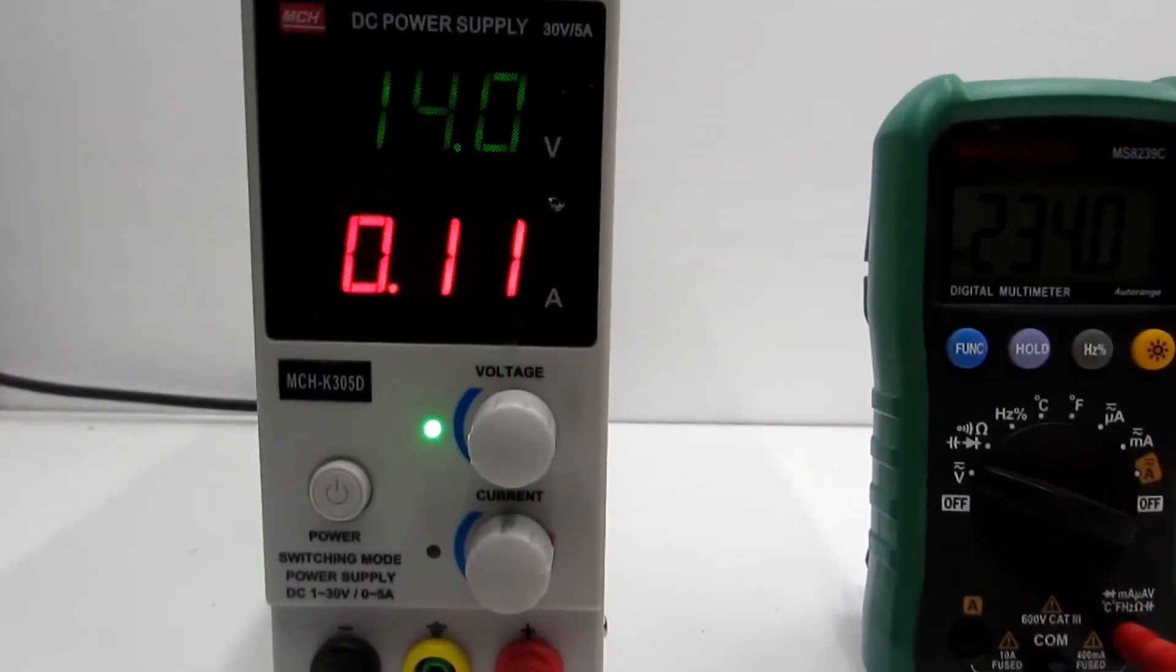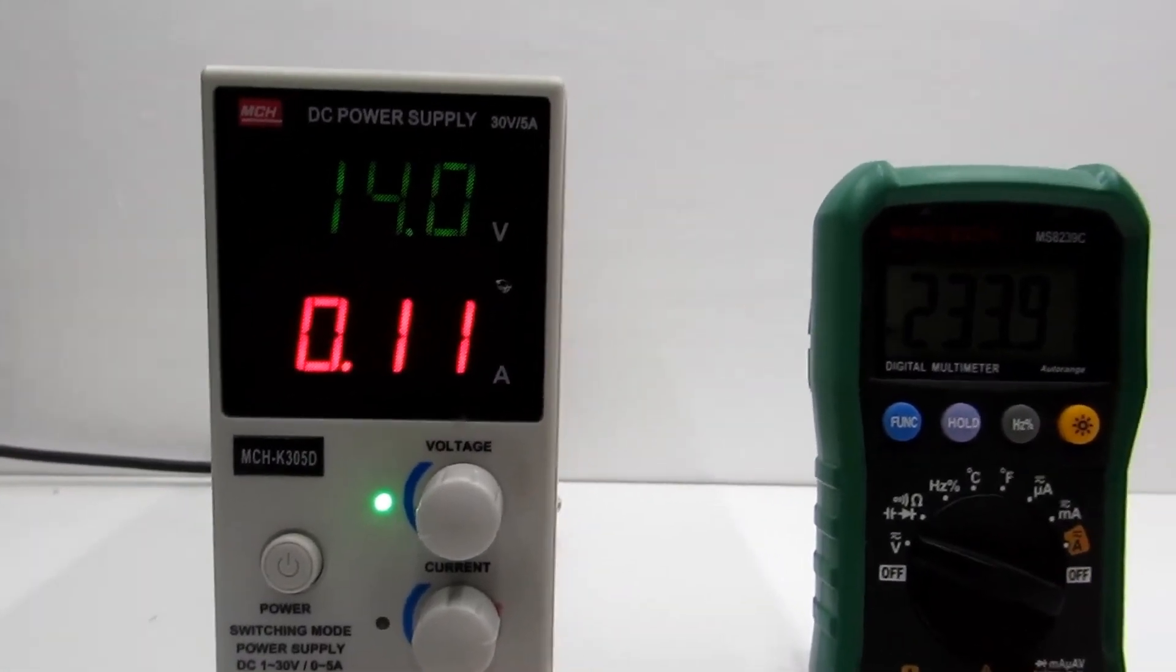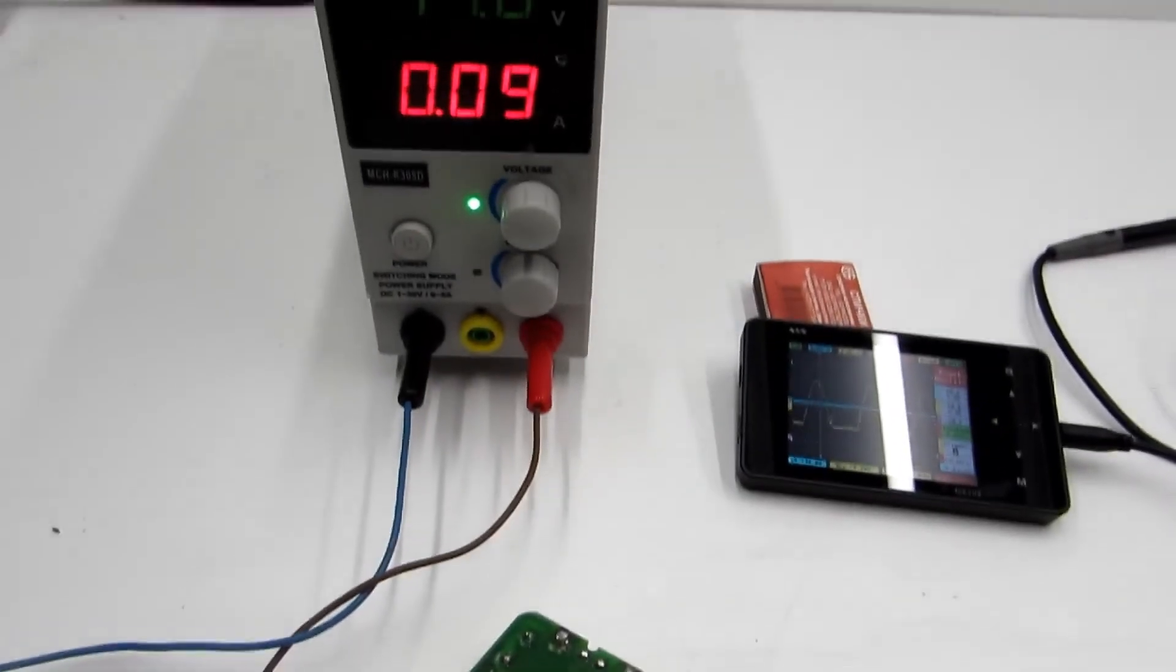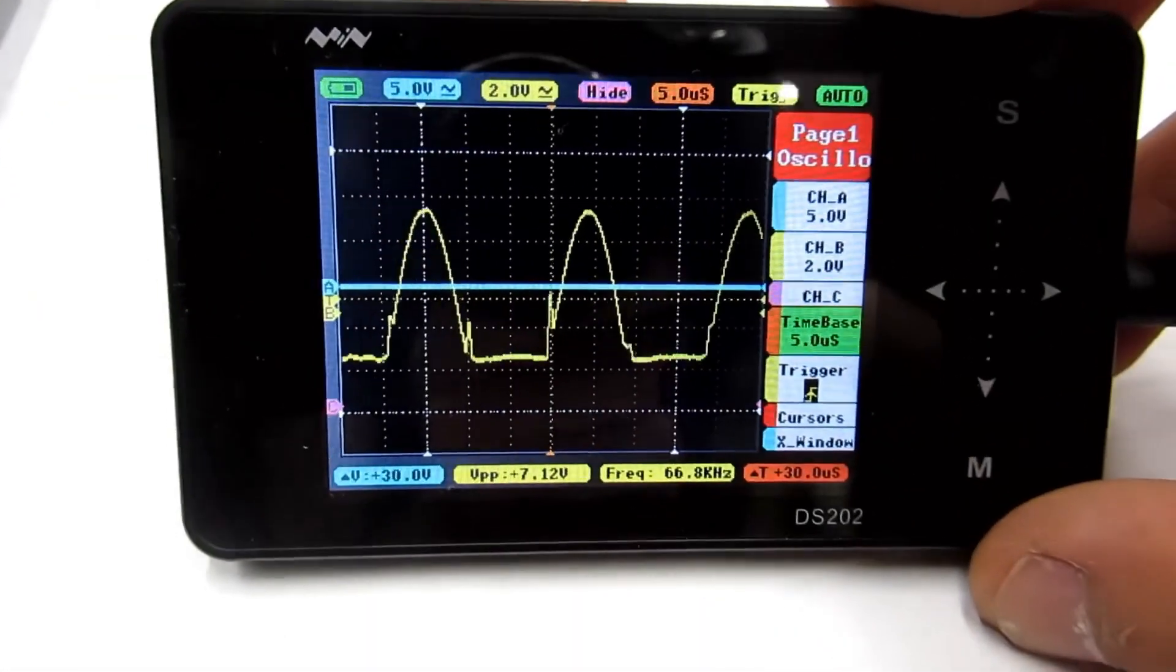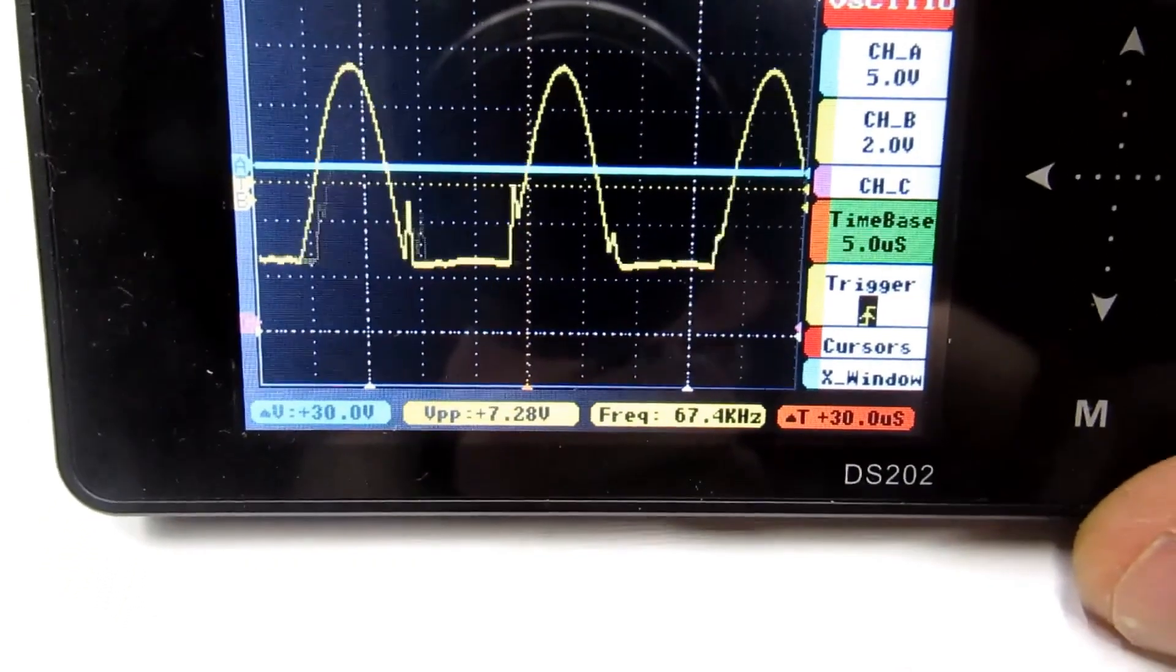And this is the no-load current at an input voltage of 14V. The operating frequency of the converter is about 68 kHz, and if the resonant capacitor is removed, the frequency will be over 200 kHz.